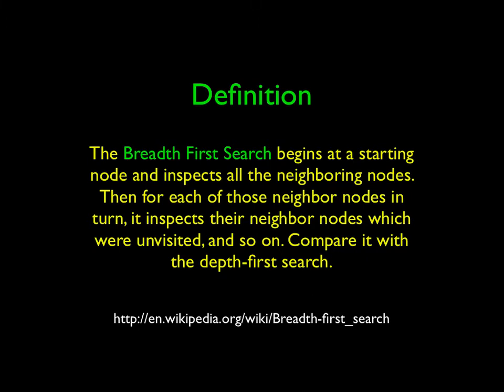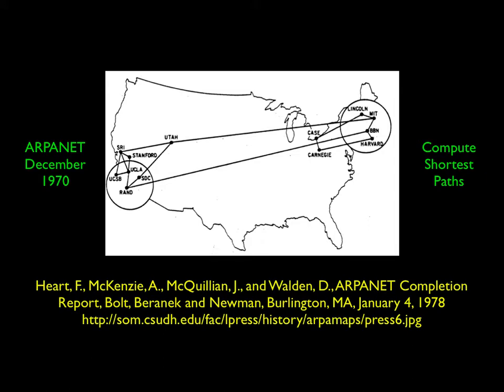The example we're going to use is network connectivity for the ARPANET — the precursor to our current internet — as of 1970. It had about twelve computers, and we're going to compute the shortest paths, the distances to all the other nodes.